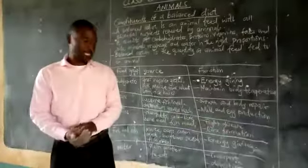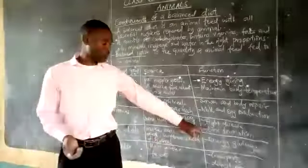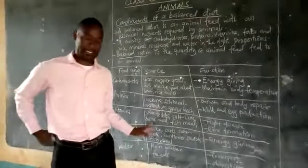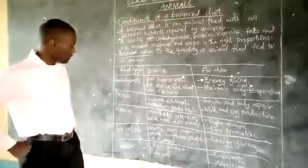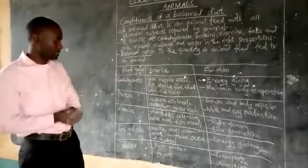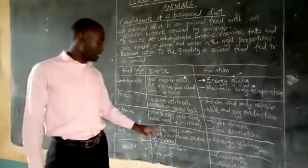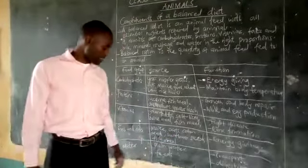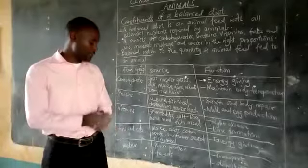Then we have fats and oils. Fats and oils are found in maize, oats, cotton seeds, sunflower seeds and fish meal.